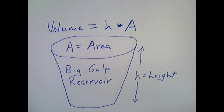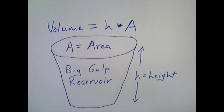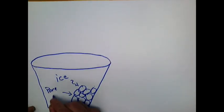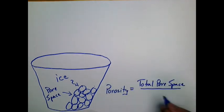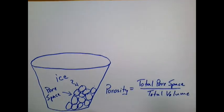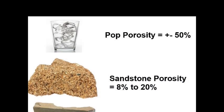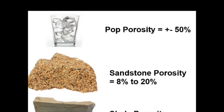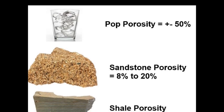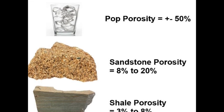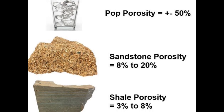But their marketing trickery doesn't fool us. We know that doesn't mean we get a gallon of pop because the ice takes up space and some of the ice has melted, adding water to the equation. The space between the ice is called pore space. Porosity is defined as the percent of the total volume that is pore space. Our big gulp may have 50 percent porosity, while a typical sandstone has porosity from 8 up to 20 percent, and a shale reservoir may have porosity from 3 to 8 percent.